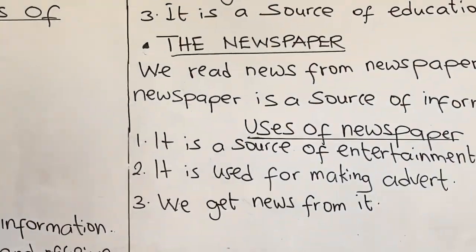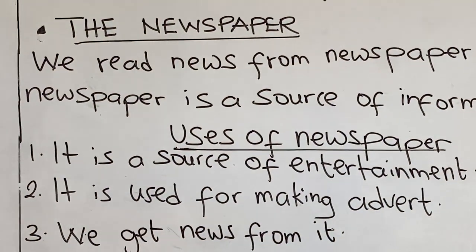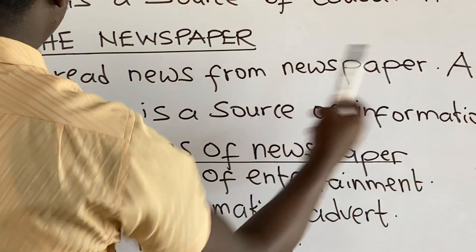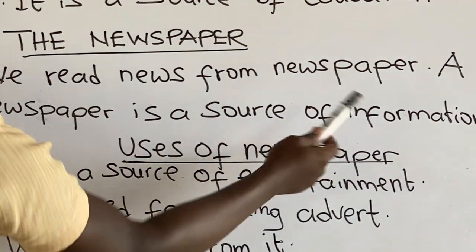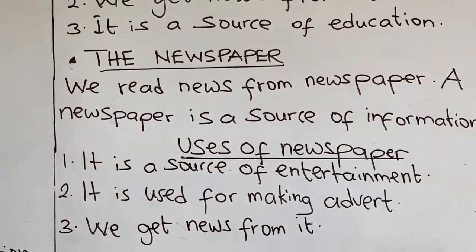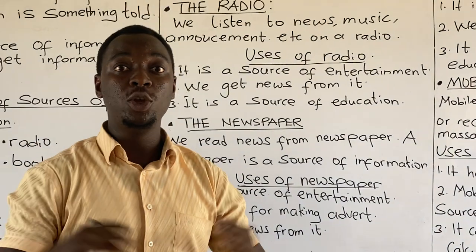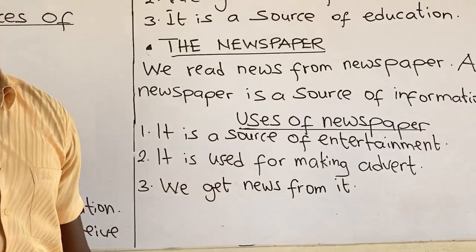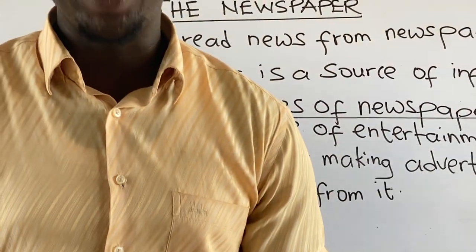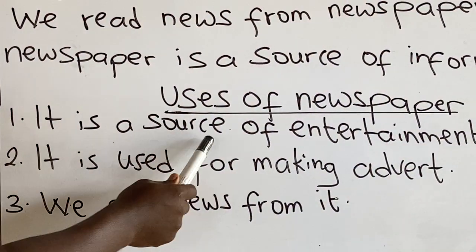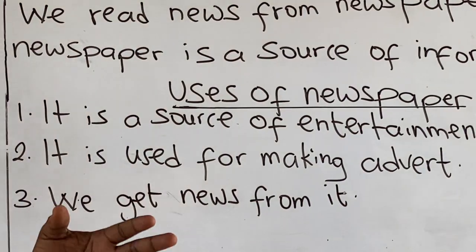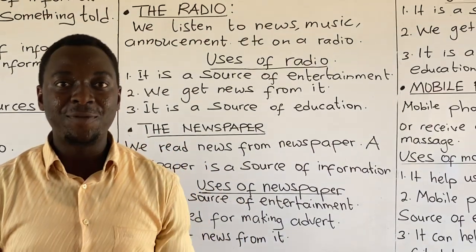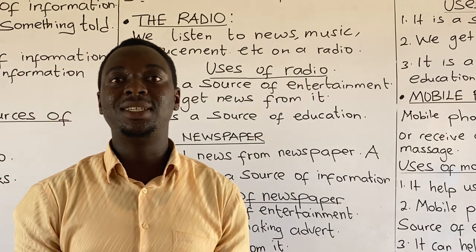The next source of information is the newspaper. We read news from the newspaper. A newspaper is a source of information — we get numerous information from the newspaper. Let's look at the uses of a newspaper. One: it is a source of entertainment. Most of the time we read funny words from the newspaper that make us laugh.